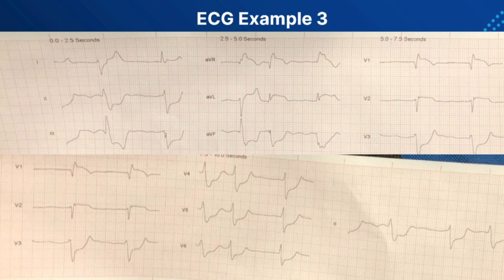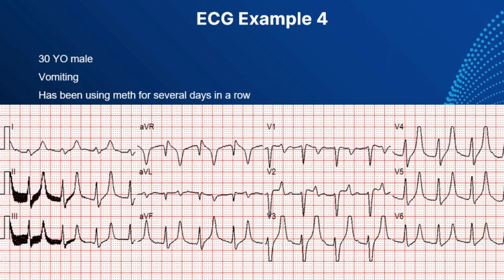ECG Case 4: a 30-year-old male found unresponsive by his father. He responds to pain. His father advised he has been vomiting and has been doing meth for several days in a row. Here you can see the peaked T-wave and the QRS complexes are widening. The T-wave is starting to separate from the QRS complex and the P-waves are flattened. This upslurring right into the T-wave is what I look for in many of my hyperkalemic patients. When you put these patients on the monitor, the T-waves can be so large that the monitor counts them as an additional QRS complex, doubling the apparent rate.